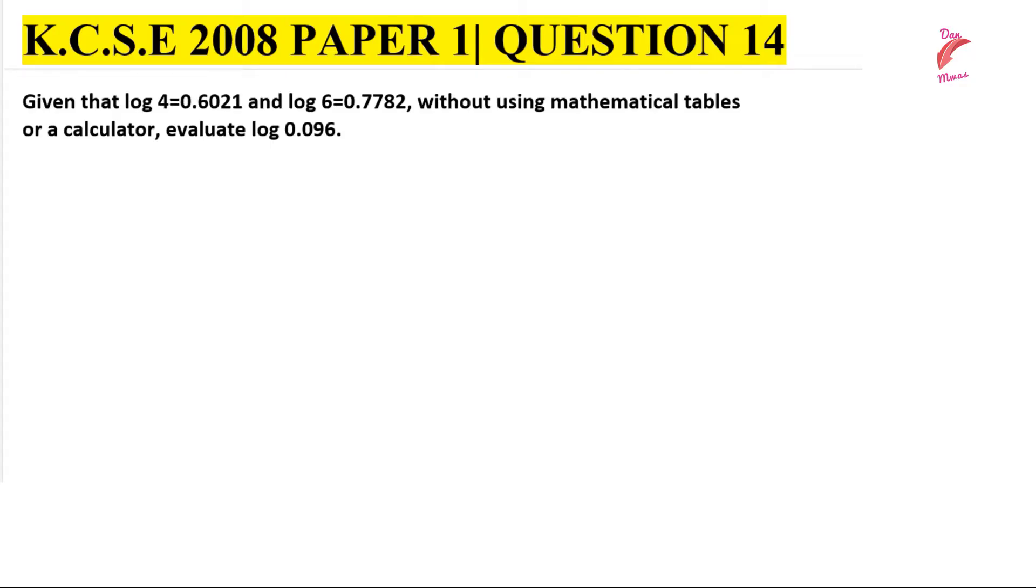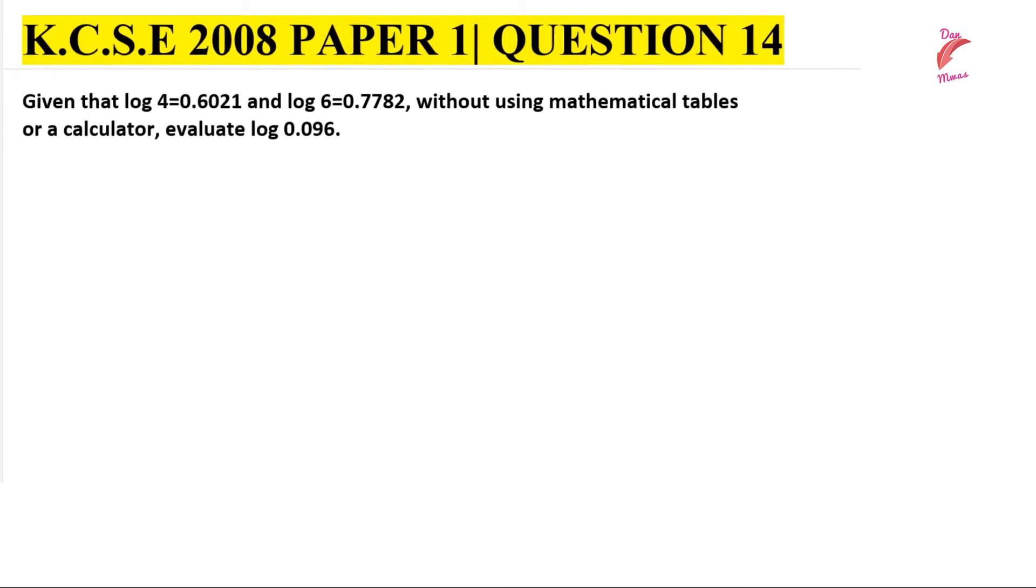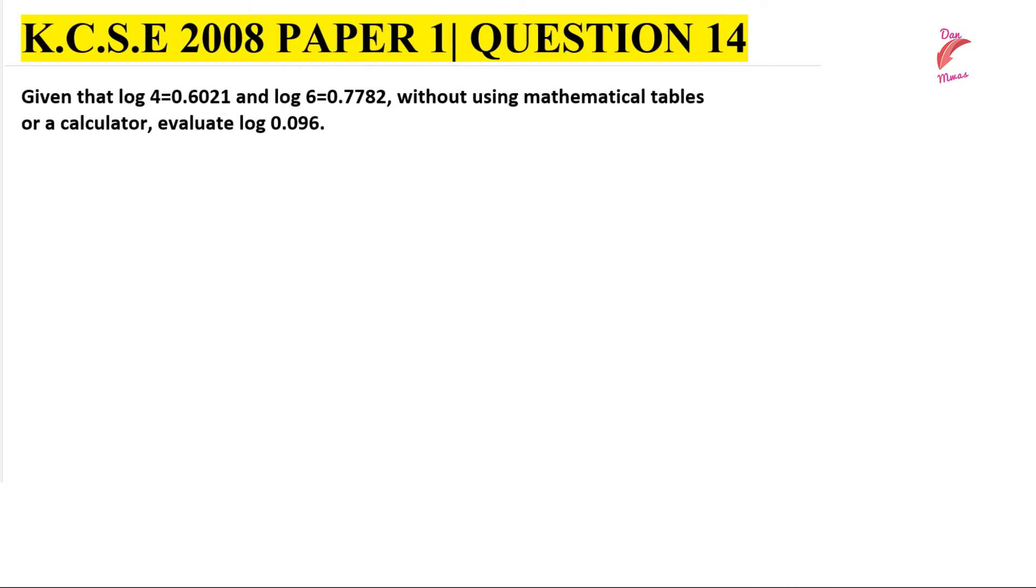Welcome, let us work out this question on logarithms. Given that log 4 equals 0.6021 and log 6 equals 0.7782, without using mathematical tables or a calculator, evaluate log 0.096. So let's go to the solution.